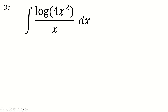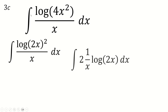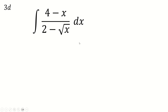For 3c, spot that 4x squared can be written as (2x) squared, and pull the 2 to the front to save effort. Write the 'over x' as 1 over x, so we can spot a function with its derivative sitting next to it. This integrates to log of (2x) squared. It's tempting to think another 2 appears somewhere, but this itself differentiates to 2 over 2x, and the 2 cancels, so the answer is just this.